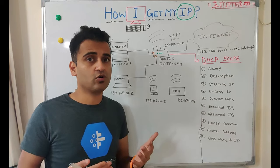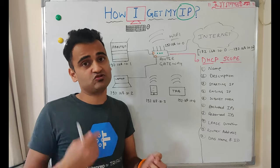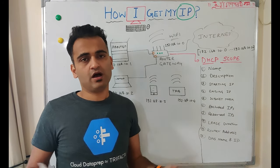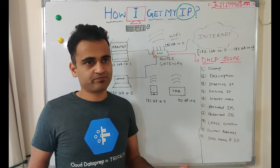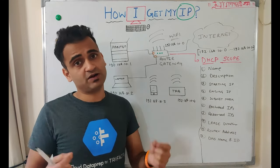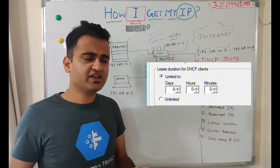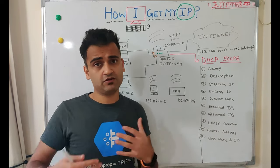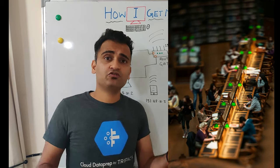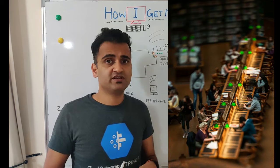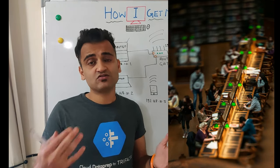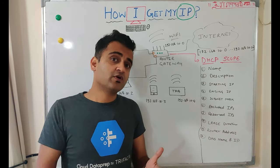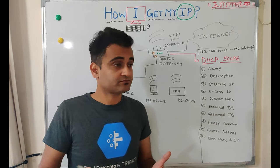Lease duration is a very important concept. When a DHCP server assigns an IP to a device and that device later leaves the network, that IP should not go to waste. The lease duration decides how long a device can retain a particular IP address. It can go up to eight days or beyond, depending on the network requirement. For a less congested network, you can set a longer lease. For high-demand environments like a library — where students connect and disconnect frequently — the lease may be as short as 30 minutes to one hour.